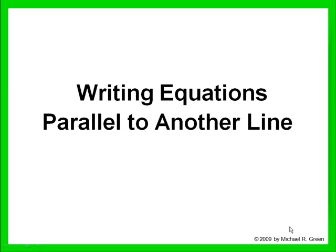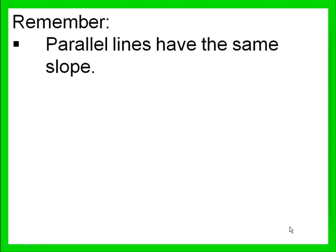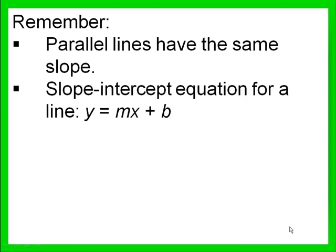Writing equations parallel to another line. In a previous lesson, we learned that parallel lines have the same slope. We also know that the slope-intercept form for the equation of a line is y equals mx plus b, where m is the slope and b is the y-intercept. We will be using both pieces of information in order to complete today's lesson.